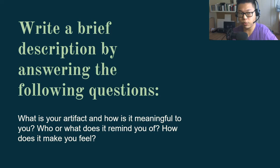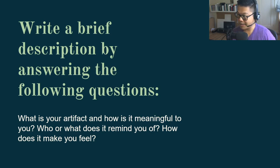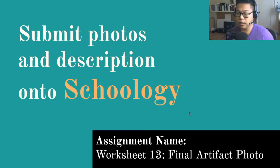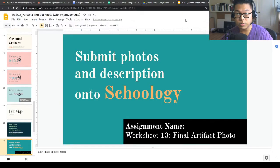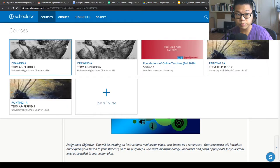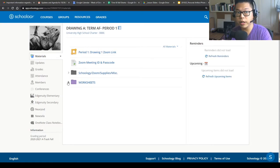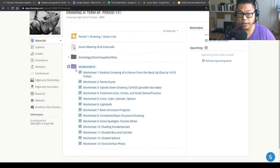So we're back. We're writing a description of your personal artifact by answering the prompting question. Once you've done that, let me show you how to submit this onto Schoology. Under the worksheets, you're going to find Worksheet 13, Final Artifact Photo. There's a way for you to submit both the photo and what you wrote about it in the same submission. Navigate to your Schoology course, go to your period, find the worksheets purple folder, and scroll to Worksheet 13 Final Artifact. Click on that.